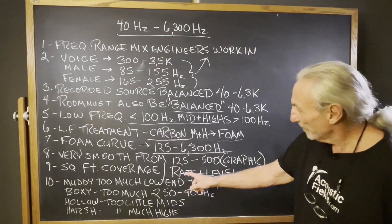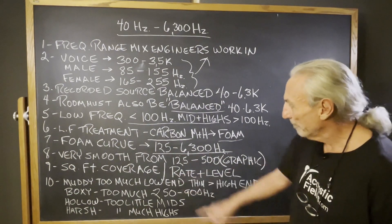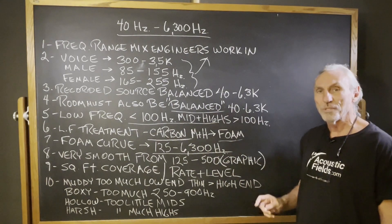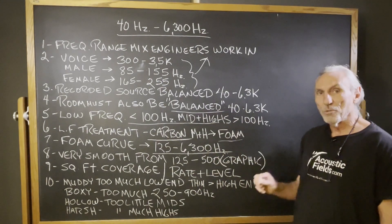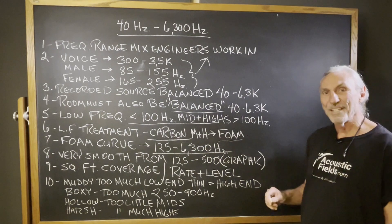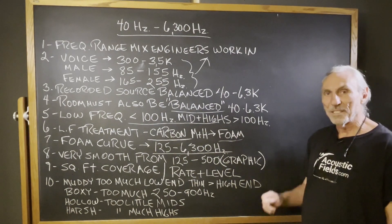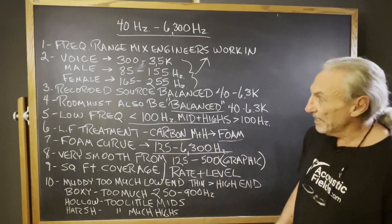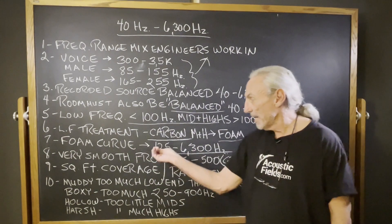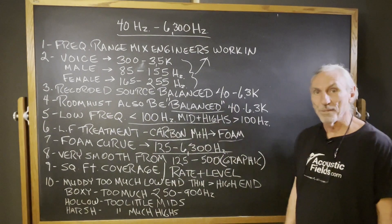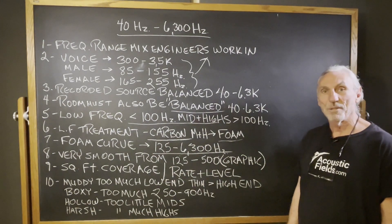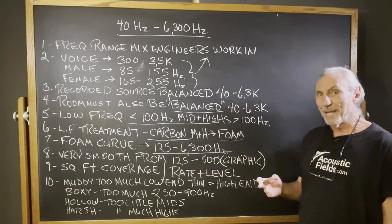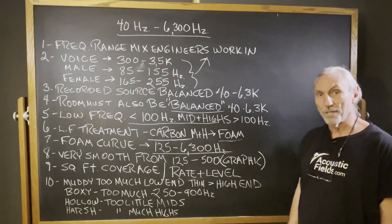So we've got to be careful. We've got to have square footage of coverage — rate and level. Those are our two most important variables. Too little treatment is not enough. You've got to have 50, 60, 70% surface area coverage in most of these rooms, and it applies for both low frequency management and middle and high frequency management. Reverberation times in larger rooms are even more of a problem, so a few panels here and there is not going to do it for you.